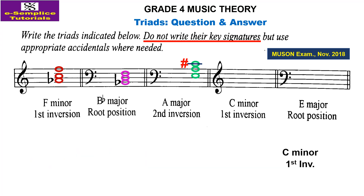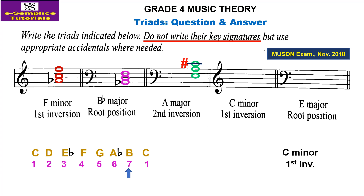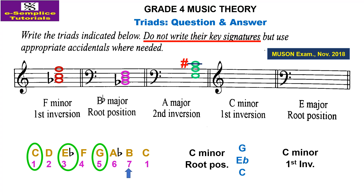Next is C minor, first inversion. The notes in C minor have key signature accidentals: B flat, E flat, and A flat. Because it is a minor key, we raise the seventh note — B loses its flat. Constructing the root position triad gives the root, the third, and the fifth. First inversion means C goes up, so first inversion becomes E flat, G, then C. Let's put this on the stave: E flat, G, and C.